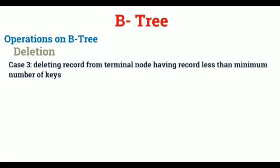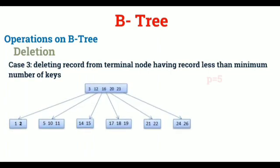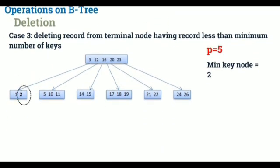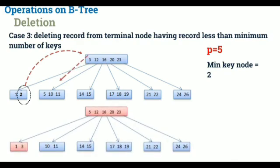Now, let's see case 3. Deleting record from terminal node having record less than minimum number of keys. Suppose this is the B-tree and we need to delete 2. The minimum number of keys for this tree is 2, that is, each node should have a minimum of 2 keys. And if we delete 2, the node will have only 1 key. So, in this case, what a child does is, it looks at parent and parent looks at other child. The other child has 3 keys. So, the parent joins 1 forming 1, 3 and the child 5 is brought up forming parent. This is how deletion is done in case 3.